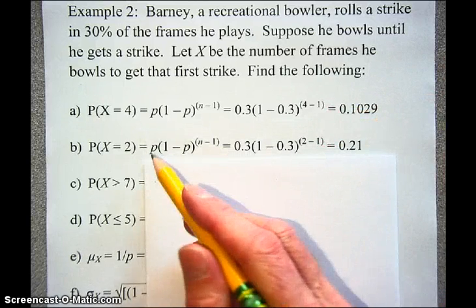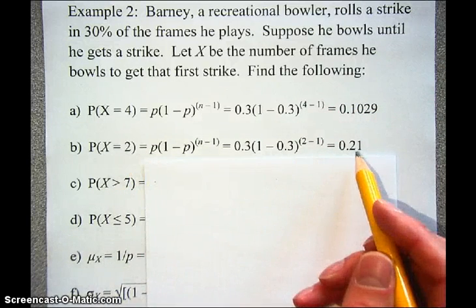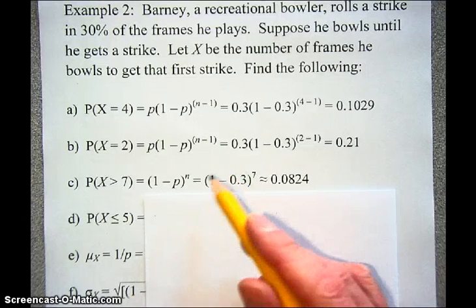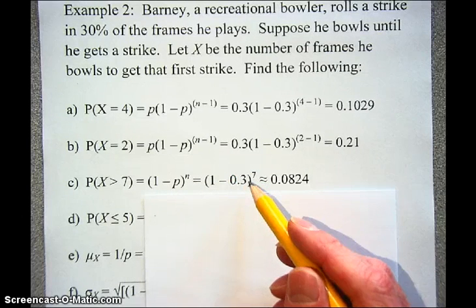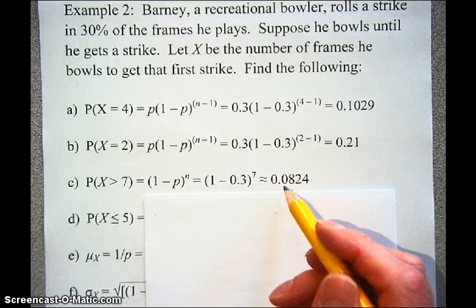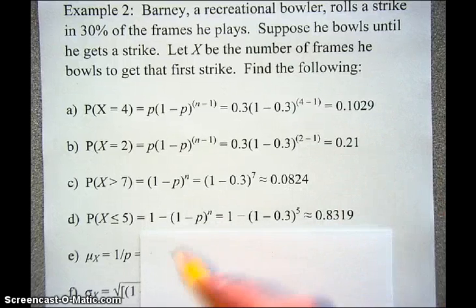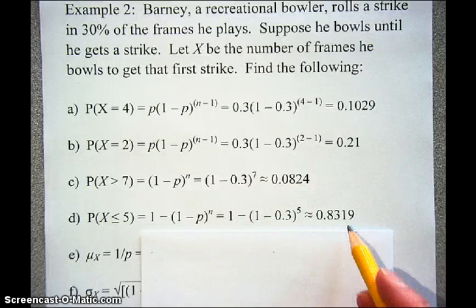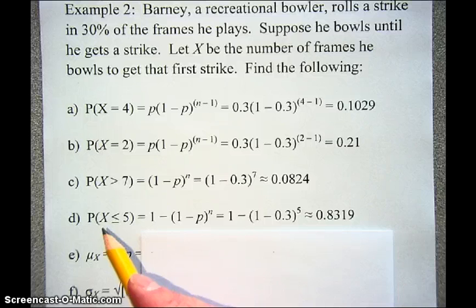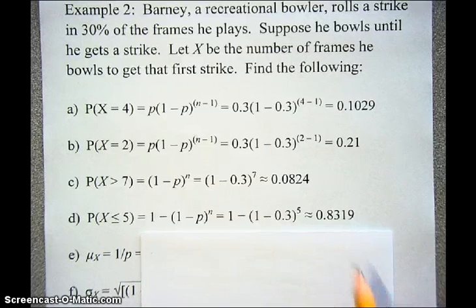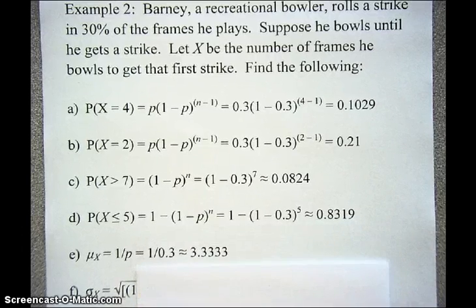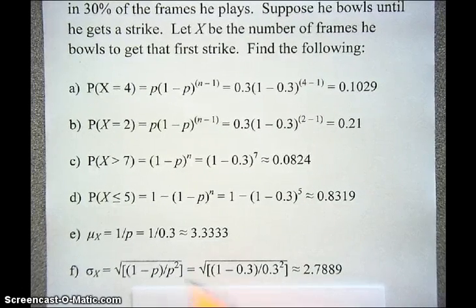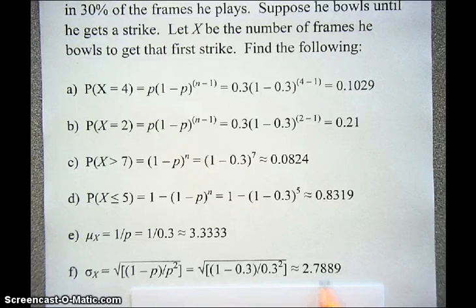The probability that the first success comes after the seventh trial is (1 minus 0.3) to the seventh power — the probability of failing all seven trials — which equals approximately 0.0824. For P(X ≤ 5), compute 1 minus (0.7) to the fifth power to get 0.8319, or use geometric CDF with 0.3 and 5 for the same result. The mean is 1 over 0.3, approximately 3.3333, and the standard deviation is the square root of (1 minus 0.3) divided by 0.3 squared, which equals approximately 2.7889.